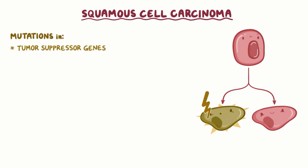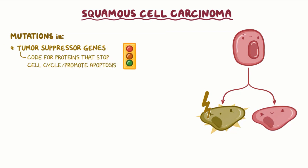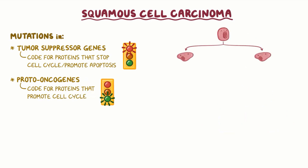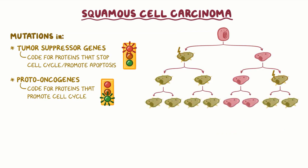Mutations can occur in tumor suppressor genes, which normally code for proteins that stop the cell cycle or promote apoptosis — they're like the cell cycle's brake pedal. Or they can occur in proto-oncogenes, which normally code for proteins that promote the cell cycle — the cell cycle's accelerator pedal. When this happens, squamous cells start dividing uncontrollably, and more mutations accumulate with each division, eventually making the cells malignant, meaning they gain the ability to invade neighboring tissues and spread to distant sites.